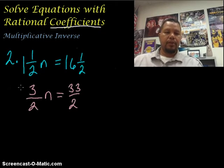So now, this looks more like the first example. We have a fraction in front of our variable n. So we have 3 halves times n equals 33 over 2, or 33 halves. So once again, to isolate for the n, we're going to use the multiplicative inverse, which is the reciprocal of 3 halves. So the reciprocal of 3 halves is 2 thirds. So we're going to multiply both sides by 2 thirds.